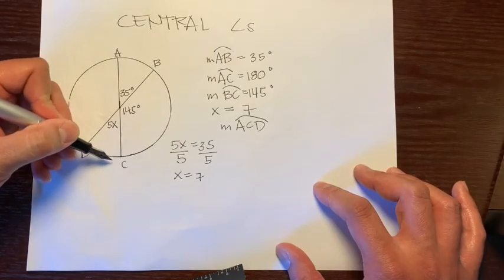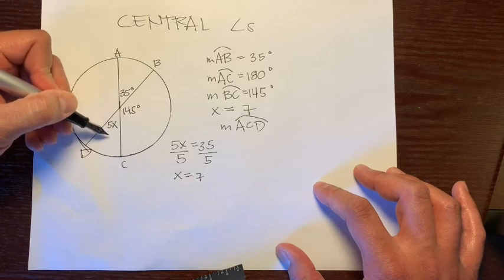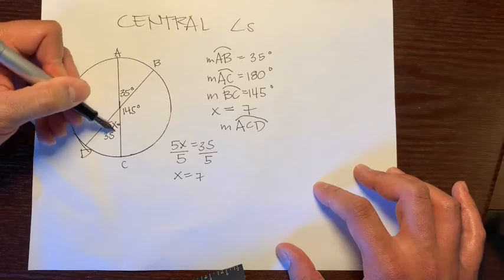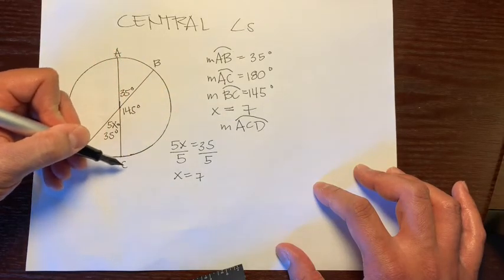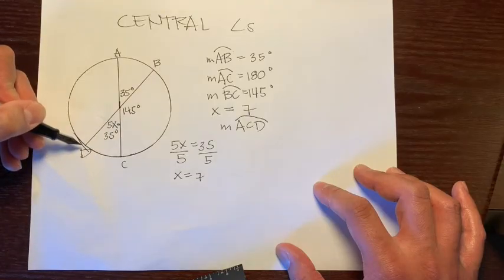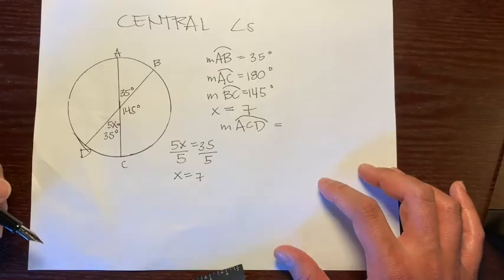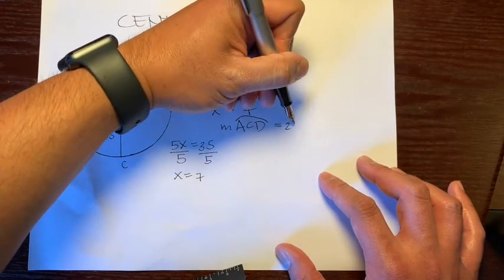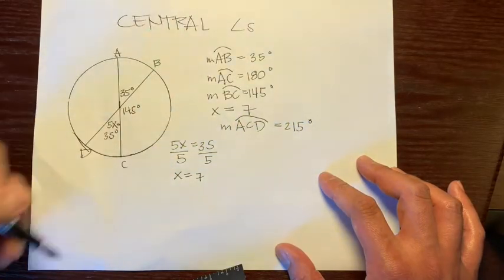And then from C to D, we know that these are vertical. So this is 35 degrees. Let's just write, I'll even put the 35 here. So we're going to go from A to C, which is 180 plus another 35. So what's 180 plus 35? I believe that is 215 degrees.